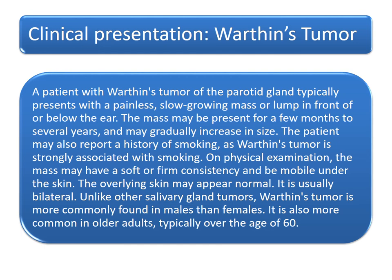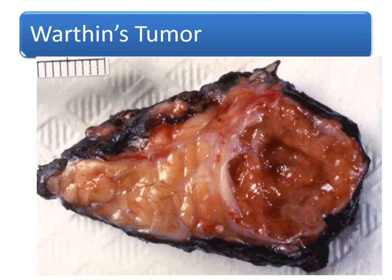The clinical presentation of Warthin's tumour: Warthin's tumour is another benign tumour involving the parotid. It is slow-growing, presenting as a swelling in front or below the ear. It usually involves smokers and can be bilateral. The overlying skin may be normal. It usually involves males in the older age group, more than 60 years of age. The gross description is totally different from pleomorphic adenoma — here you can appreciate a capsule and cystic spaces inside the tumour.